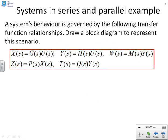So to finish with a slightly more involved example, but hopefully not too challenging, you'll notice I've now got five subsystems. X equals GU, Y equals HU, W equals MY, Z equals PX, and T equals QY. And we want to put this into a block diagram. So what I'm going to do is, you'll notice it's got similar equations before, but U is the main input signal. So I'm going to take U there.